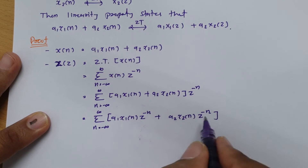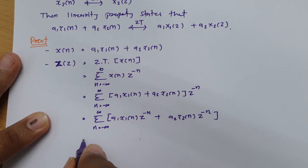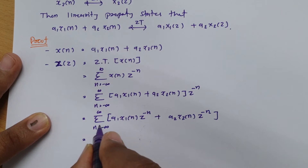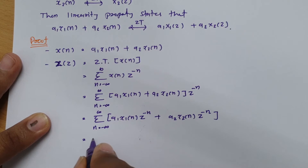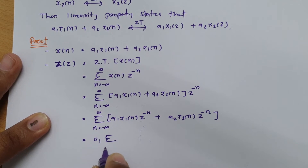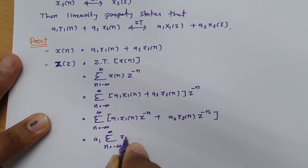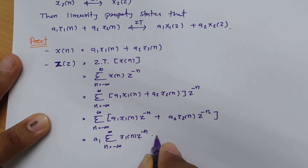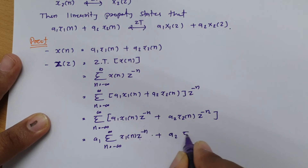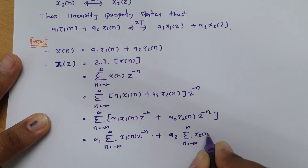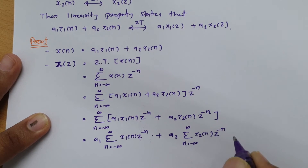Now writing the two summations separately, since a1 is a constant we can take it outside: a1 times the summation from n = −∞ to +∞ of x1(n)·z^(−n), plus a2 — which is also a constant — times the summation from n = −∞ to +∞ of x2(n)·z^(−n).